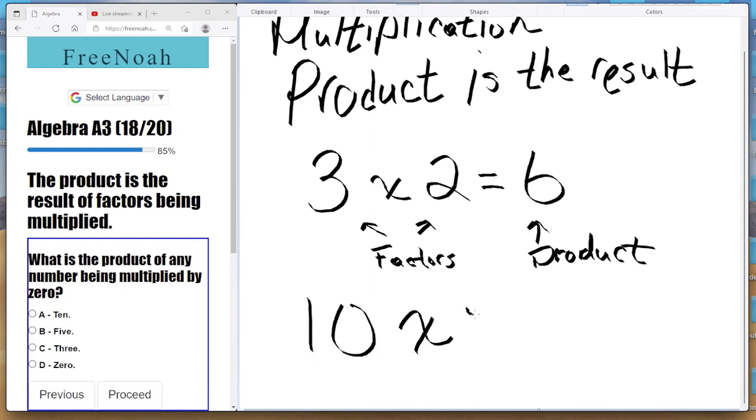One more example here. Ten times five equals 50. Alright? So, this 50 here is a product. And this ten and this five, these are factors.